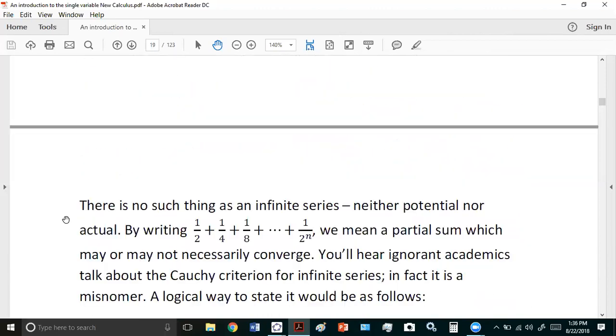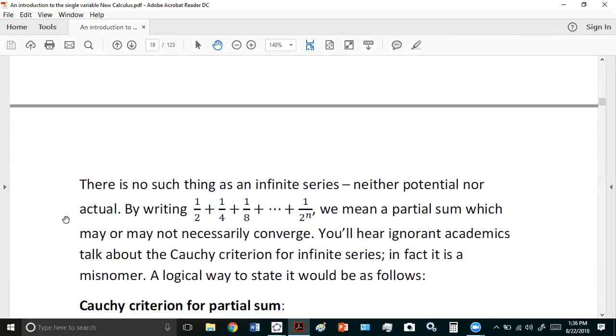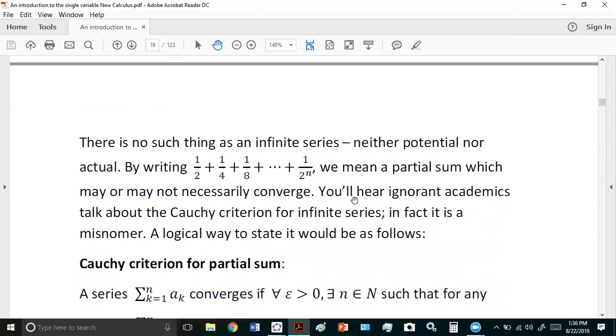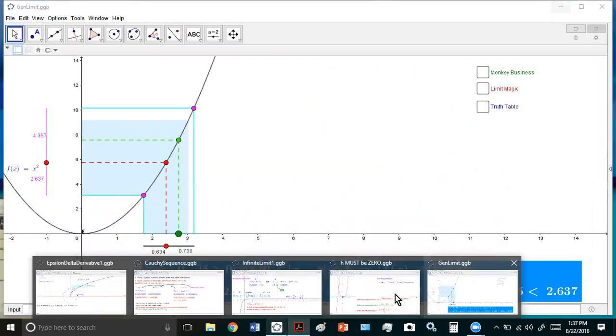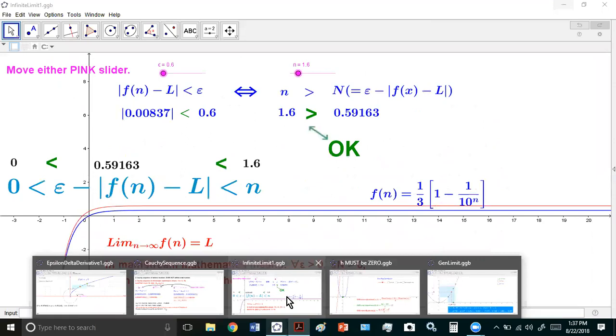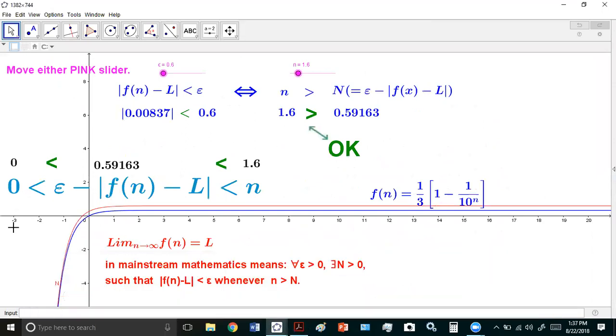The next big misconception is that there is such a thing as an infinite series, but there isn't neither potential nor actual. So when we write an expression like this, we mean a partial sum, which may or may not necessarily converge. And you'll hear ignorant academics talk about the Cauchy criterion for infinite series. The Cauchy criterion is really just a very obvious statement about a convergent series.